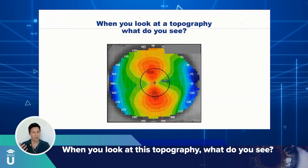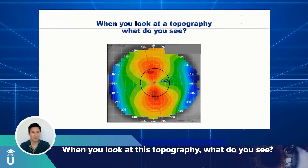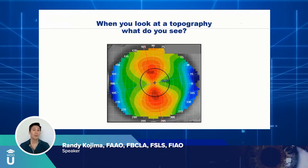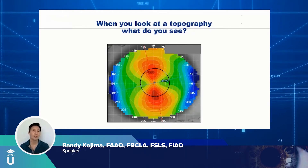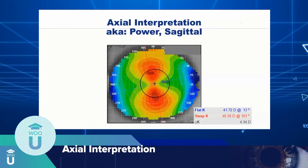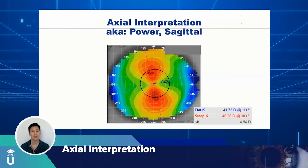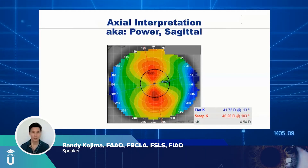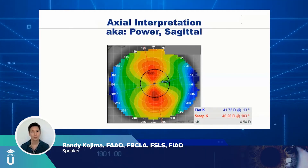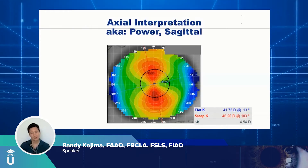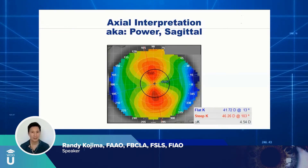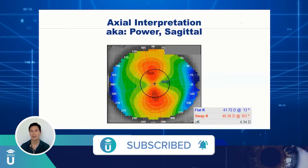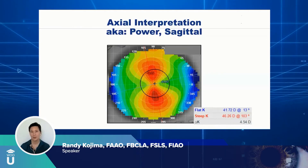When you look at a topography map, what jumps out at you? Is it power? Is it shape? Is it elevation? Do you think about quality of vision? One of the ways we can observe topography is based on its power. The axial interpretation is one of those mathematical calculations that converts the data the instrument grabs to something that displays shape and power. Here we see how the eye is distinguished based on power.